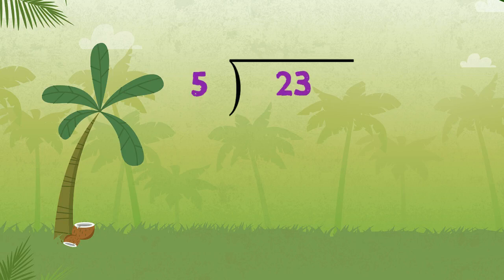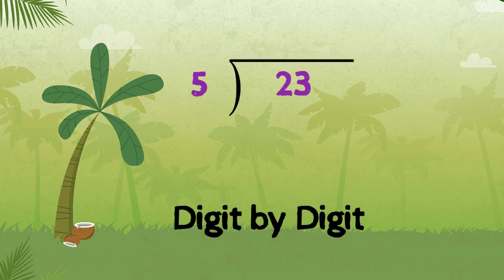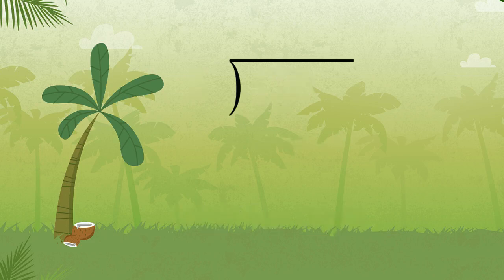The rule of multi-digit division is that we always divide digit by digit, and we always start from the first number on the left and make our way to the right. Let's look at number 2 first — how many 5s do I need to make number 2? That looks like it's too small, so we move to the next number. Now 23 — how many 5s do I need to make number 23, or almost 23?